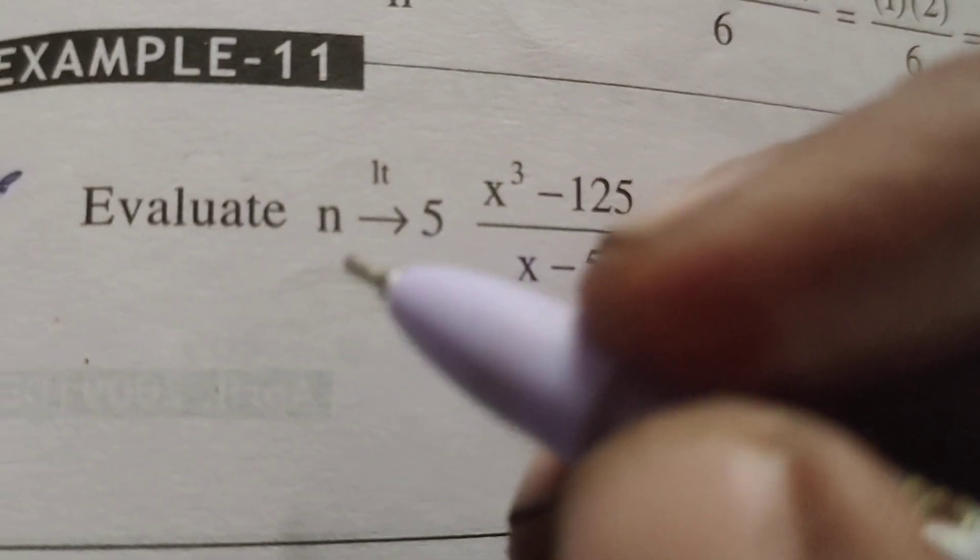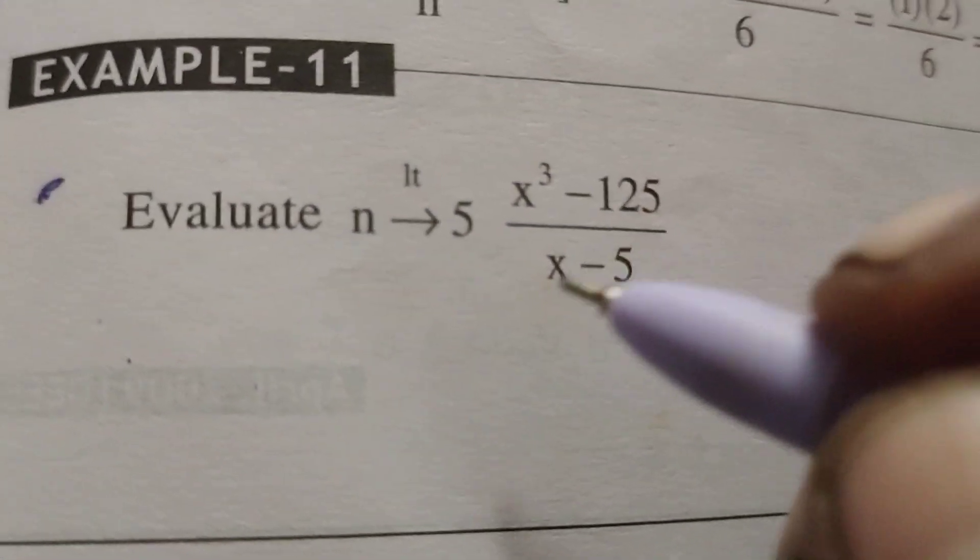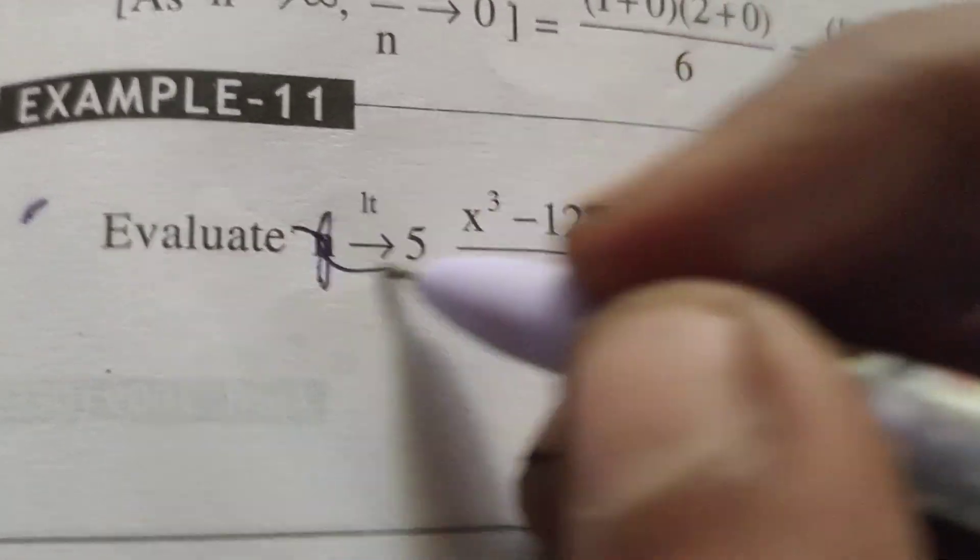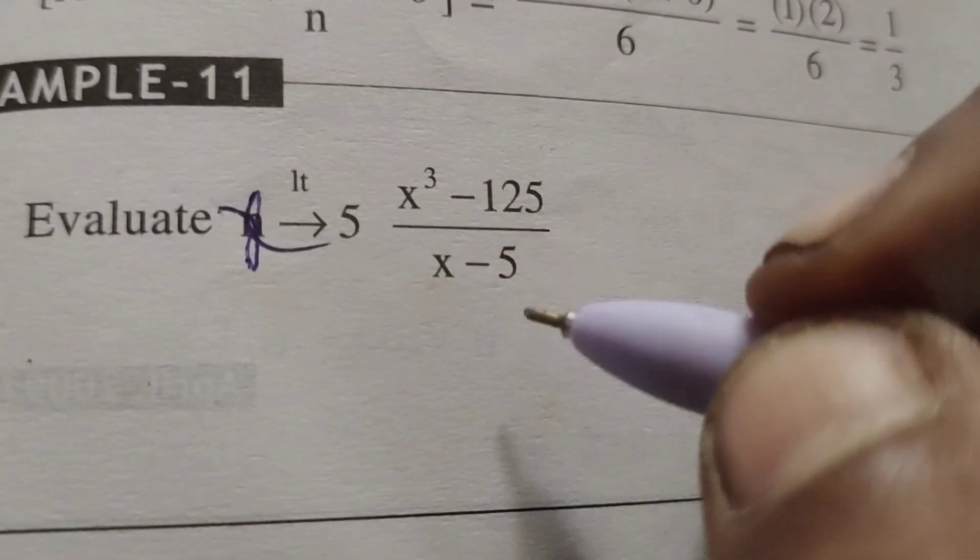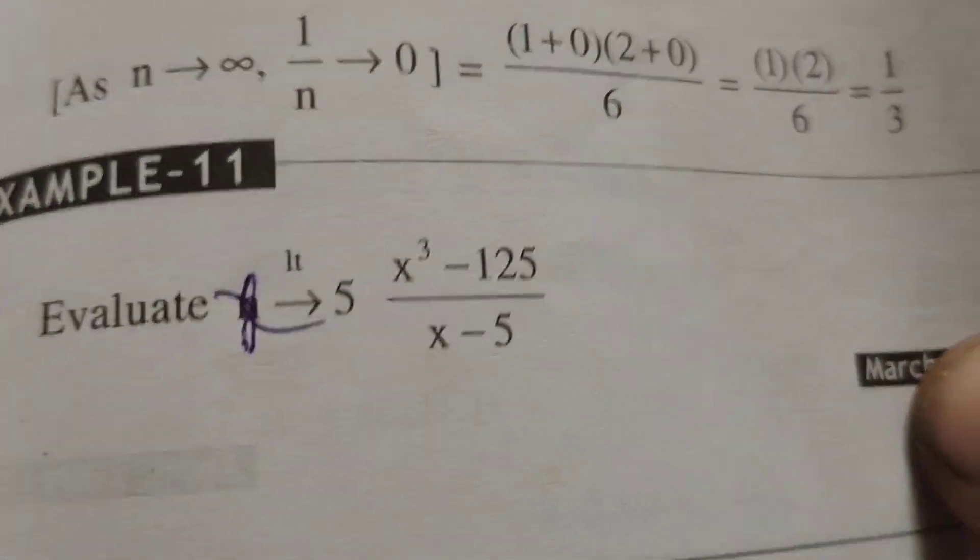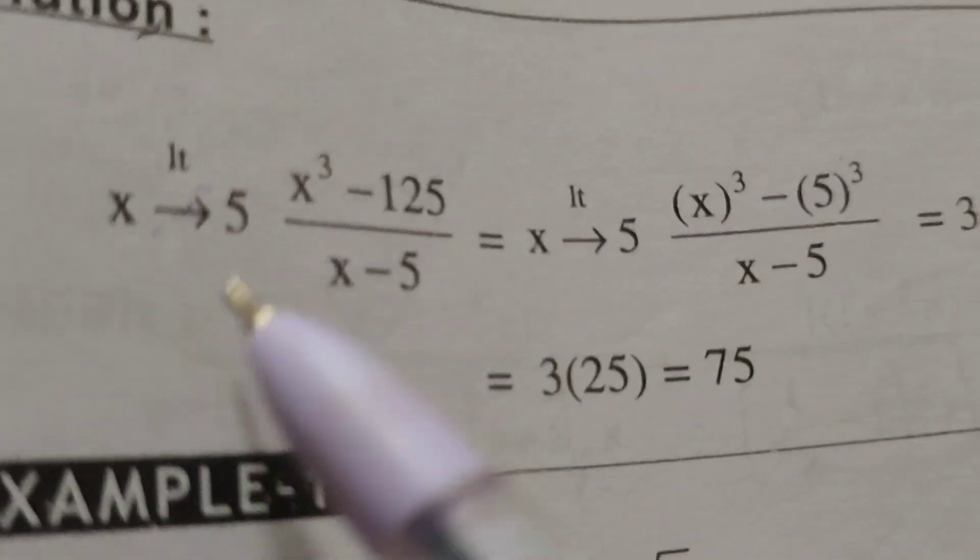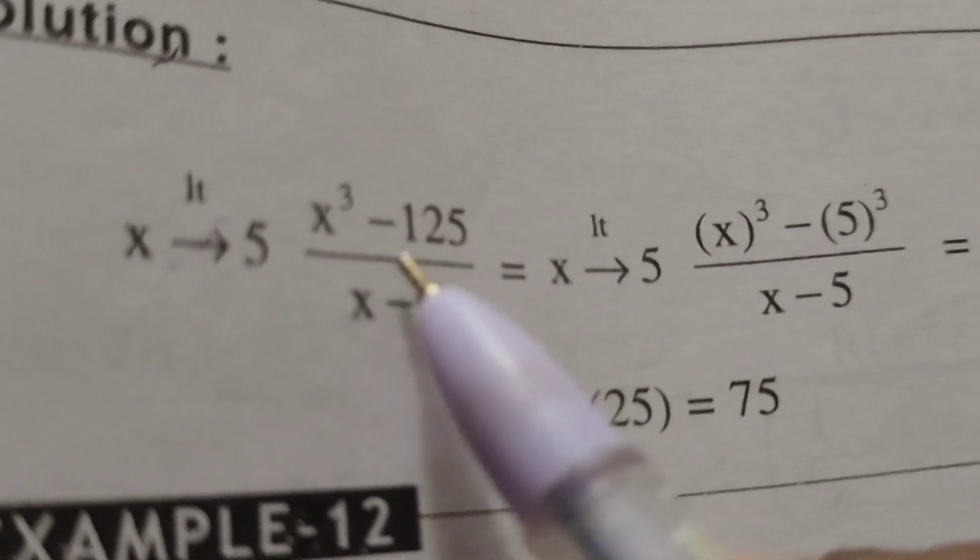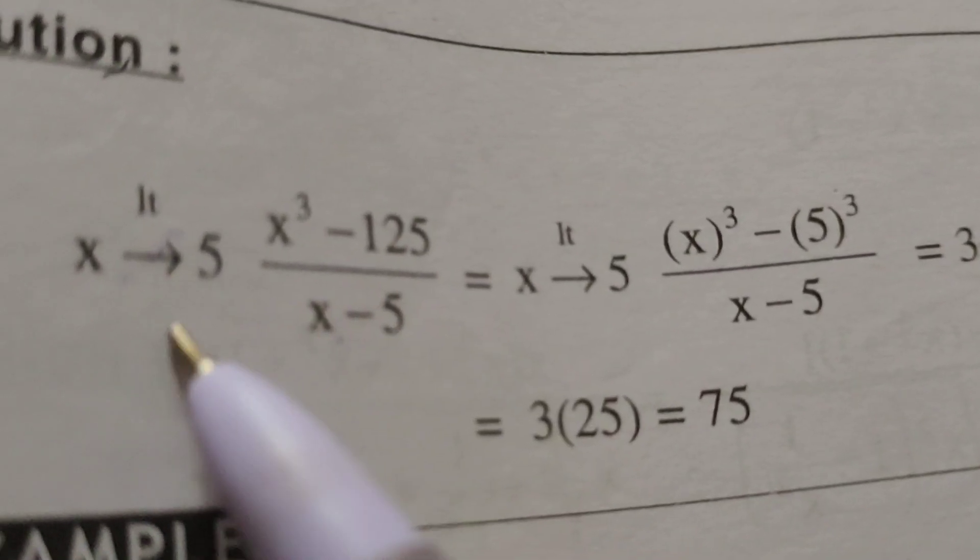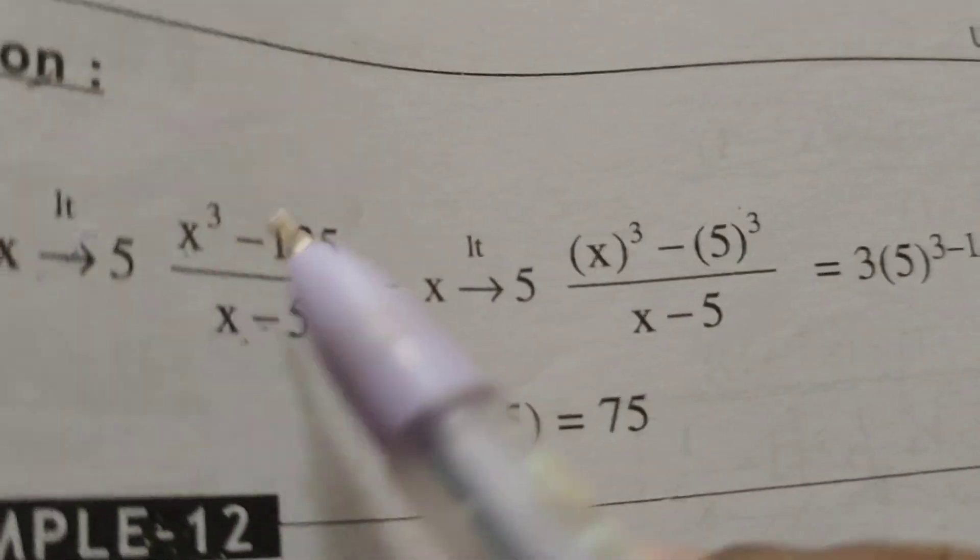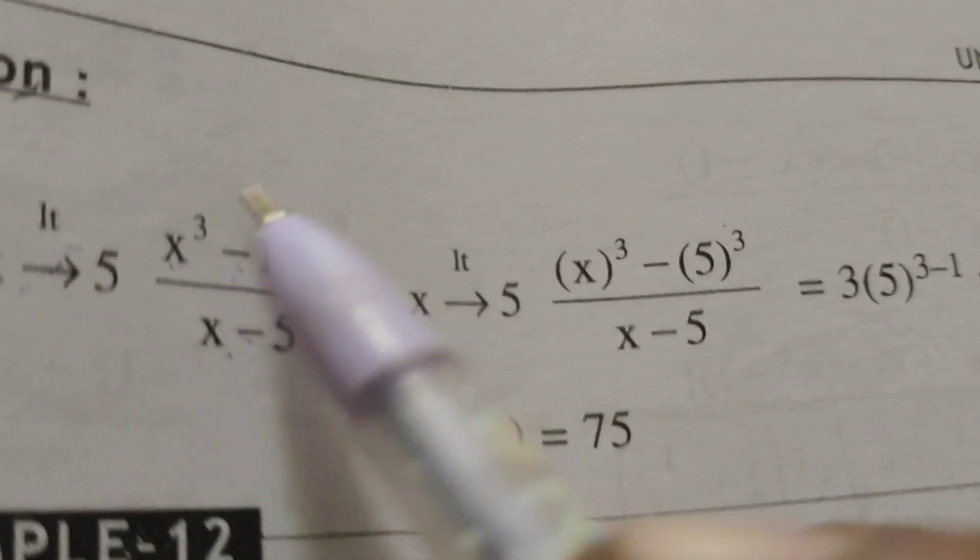Now today we are going to explain this evaluated limits problem. Evaluate limit x tends to 5, x cube minus 125 by x minus 5. First of all, here given problem limit x tends to 5, x cube minus 125 by x minus 5.